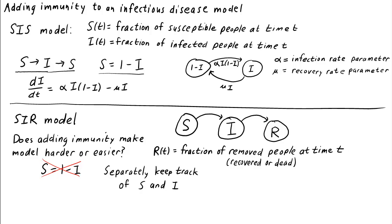Instead, we need to separately keep track of both s and i. If some people have recovered, s could be less than 1 minus i.